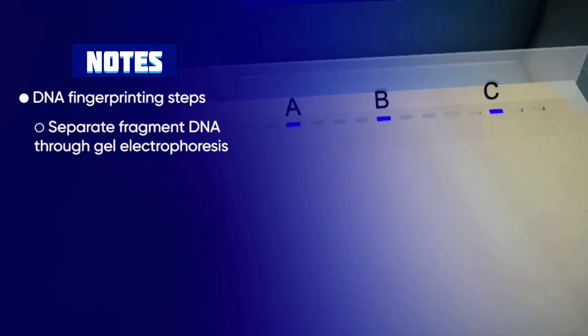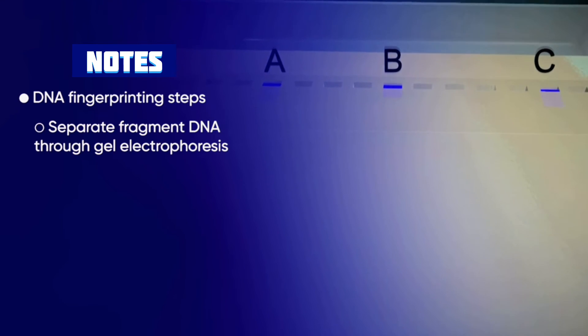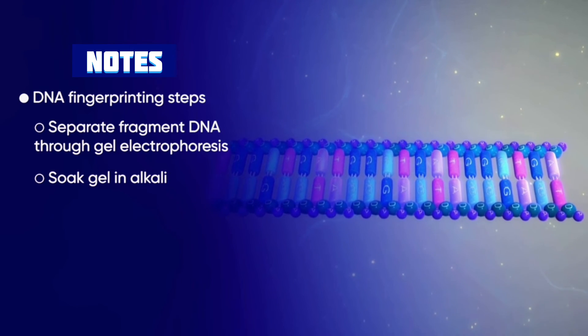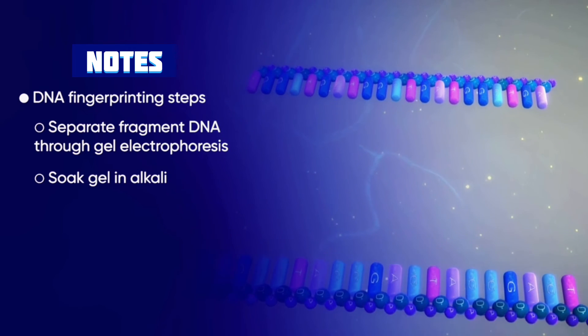Using gel electrophoresis, separate the DNA fragments according to their size. Soak the gel in alkali to denature the double-stranded DNA into its single-stranded form.